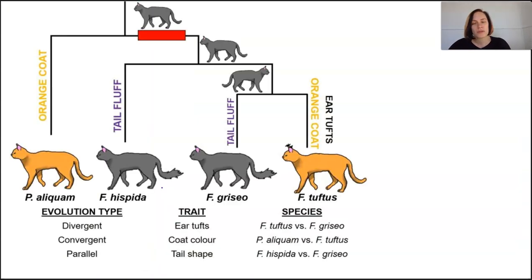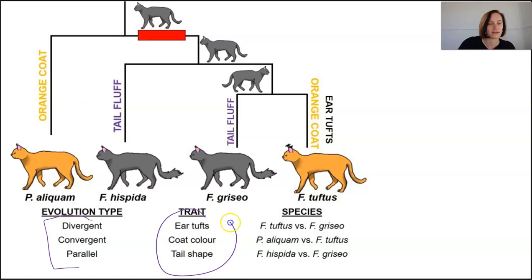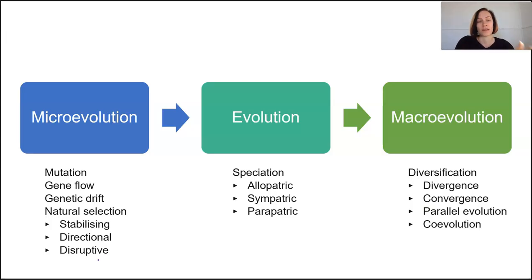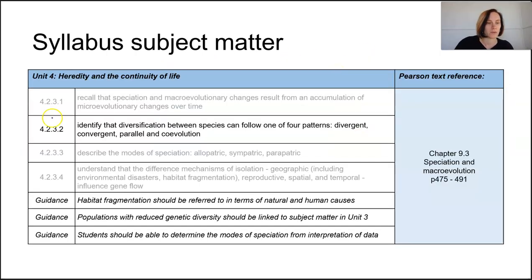Sometimes multiple types of diversification patterns can be at work in the same organism. Looking across the whole scale of changes seen in evolution, it's important to understand how each stage occurs, but also to make clear links between these processes and what leads from one thing to another. All of these patterns of diversification are extremely interconnected.